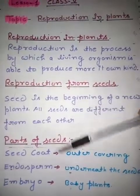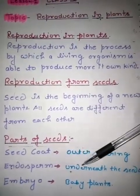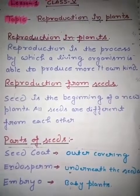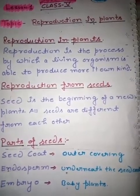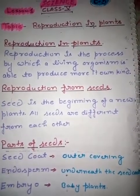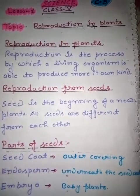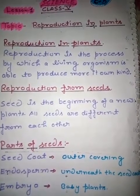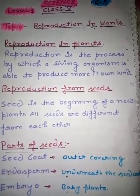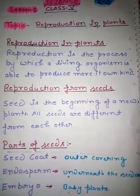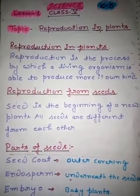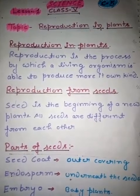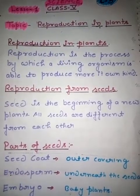Last one is the embryo. Embryo kya hota hai? Yeh bhi ek baby plant hota hai, aur yeh young plant mein turn hota hai when it gets the right conditions for growth. Yeh tab tak turn karega jab tak plants ko growth ke liye right conditions nahi milti.